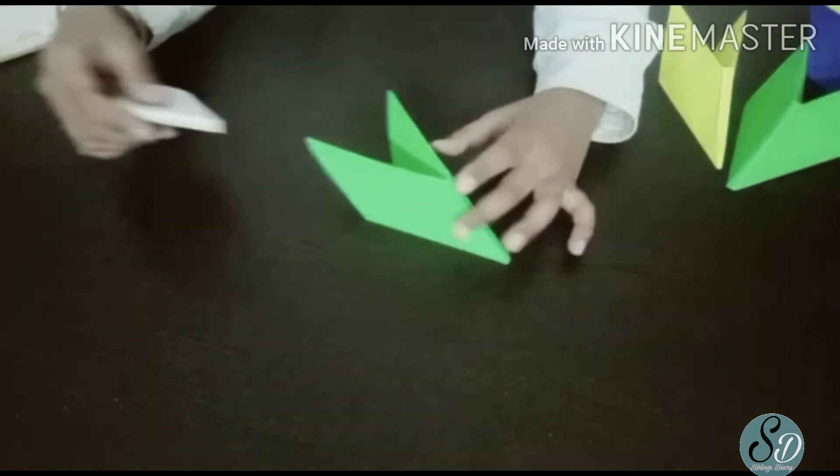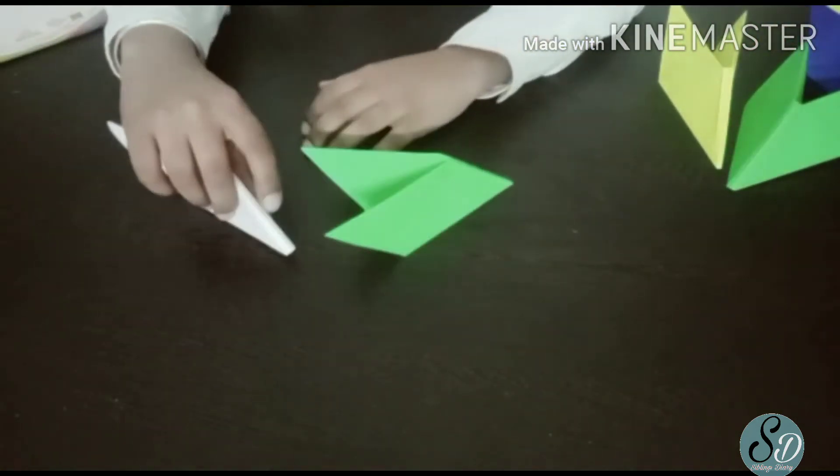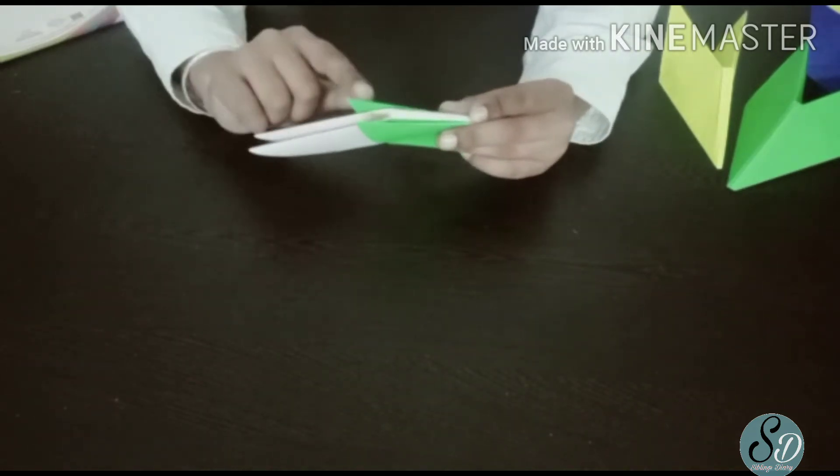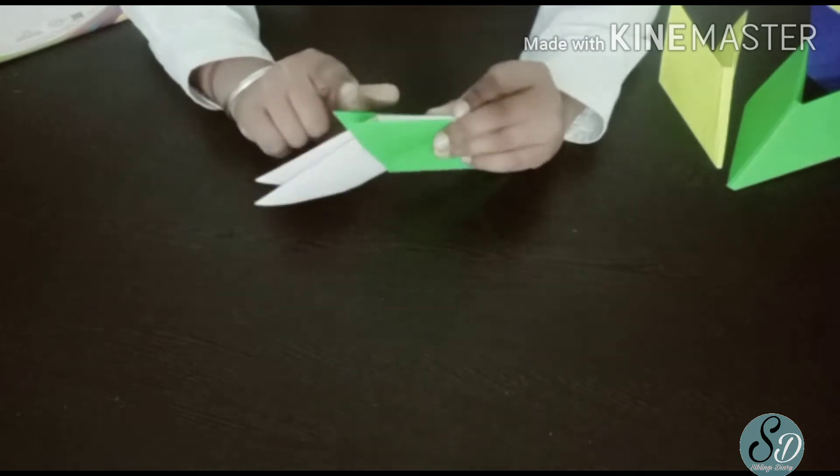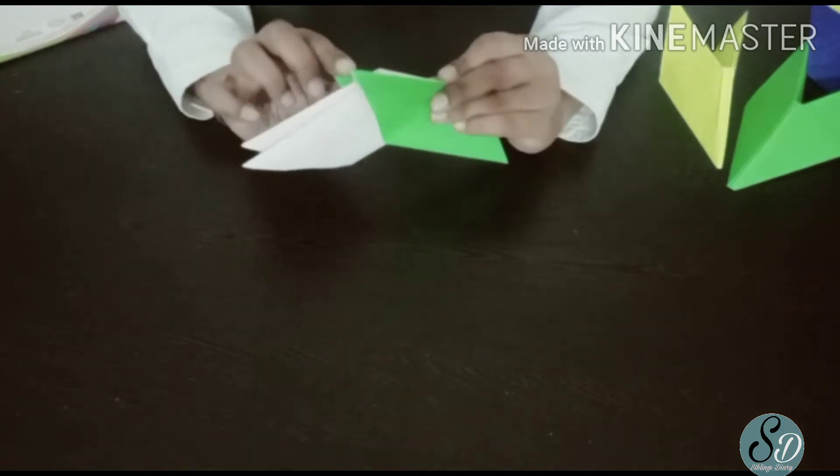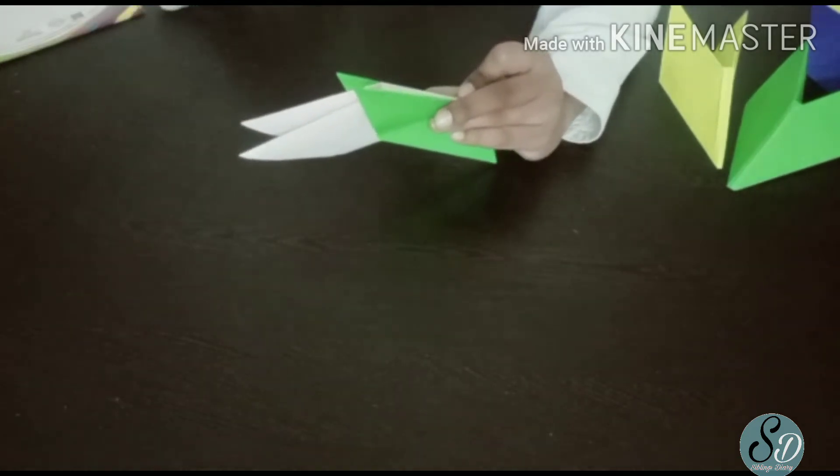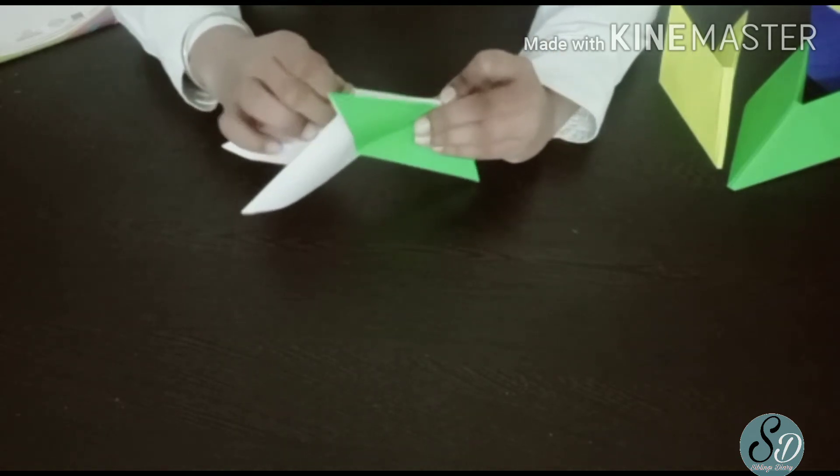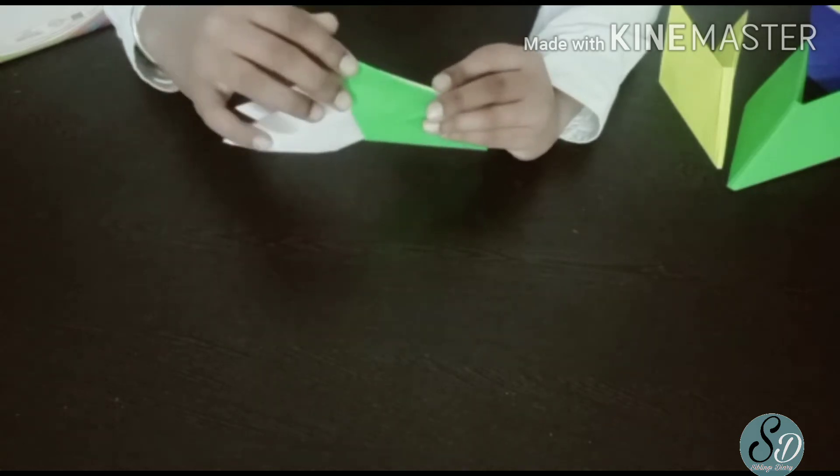Now we have to take one and put this in another. The extra part, the side part, should be folded inside the another like this. It should be done tightly.